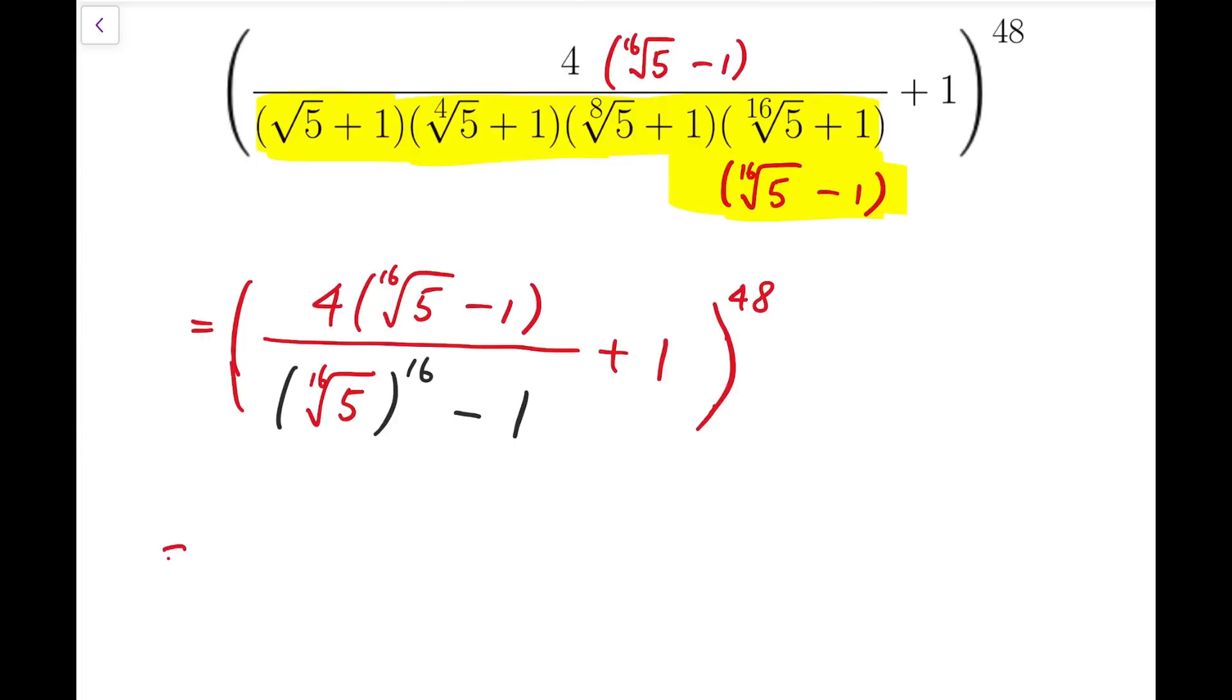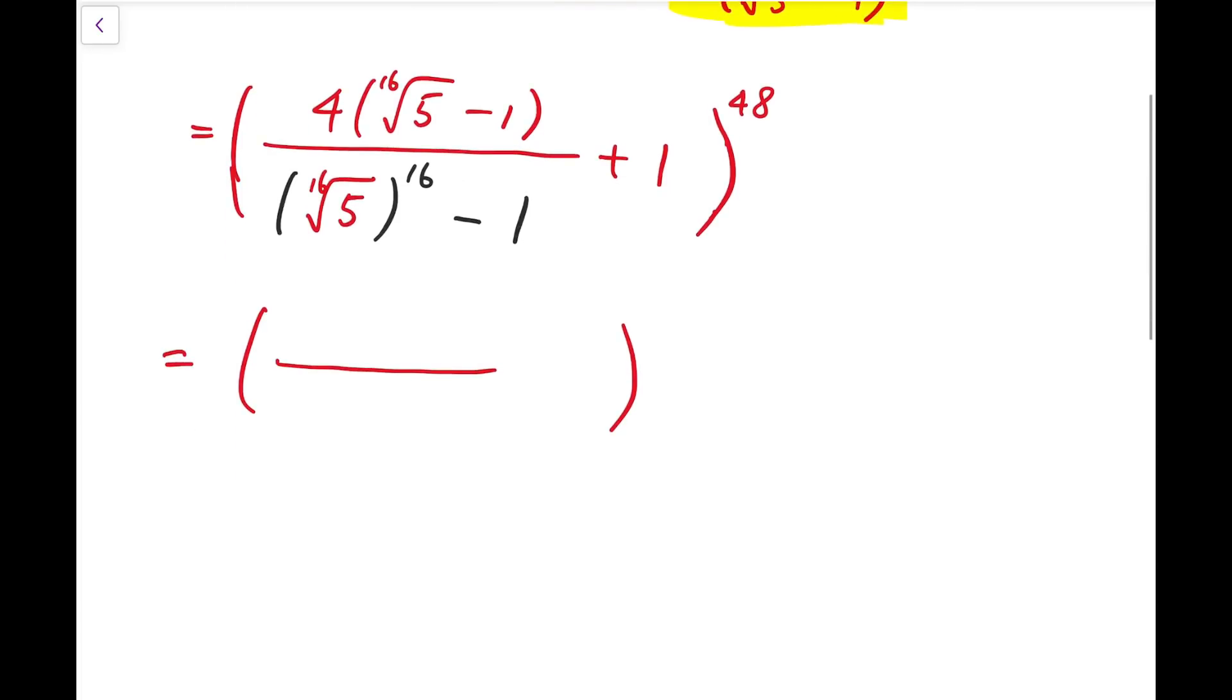Now, then this equals to 5 minus 1. This is a very important step because I've managed to cancel out the 16th root with the 16th power. So that remains 5, and 5 minus 1 is actually 4, so it cancels out with the numerator term.